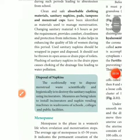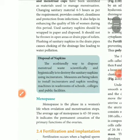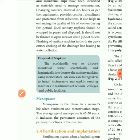Next we go to menopause. Menopause is a phase in a woman's life when ovulation and menstruation stop — the menstrual cycle stops, and that is called menopause. Menopause happens at the average age of 45 to 50 years. It represents permanent cessation of the primary function of the ovary. After menopause, the ovary no longer produces eggs.